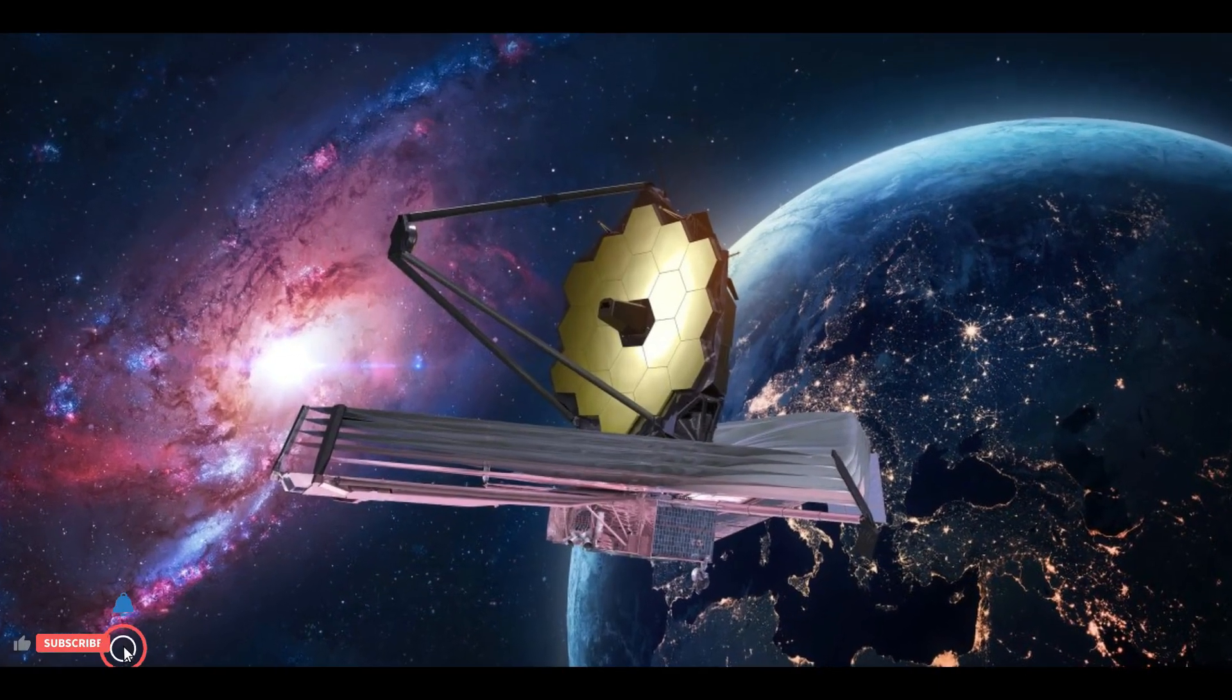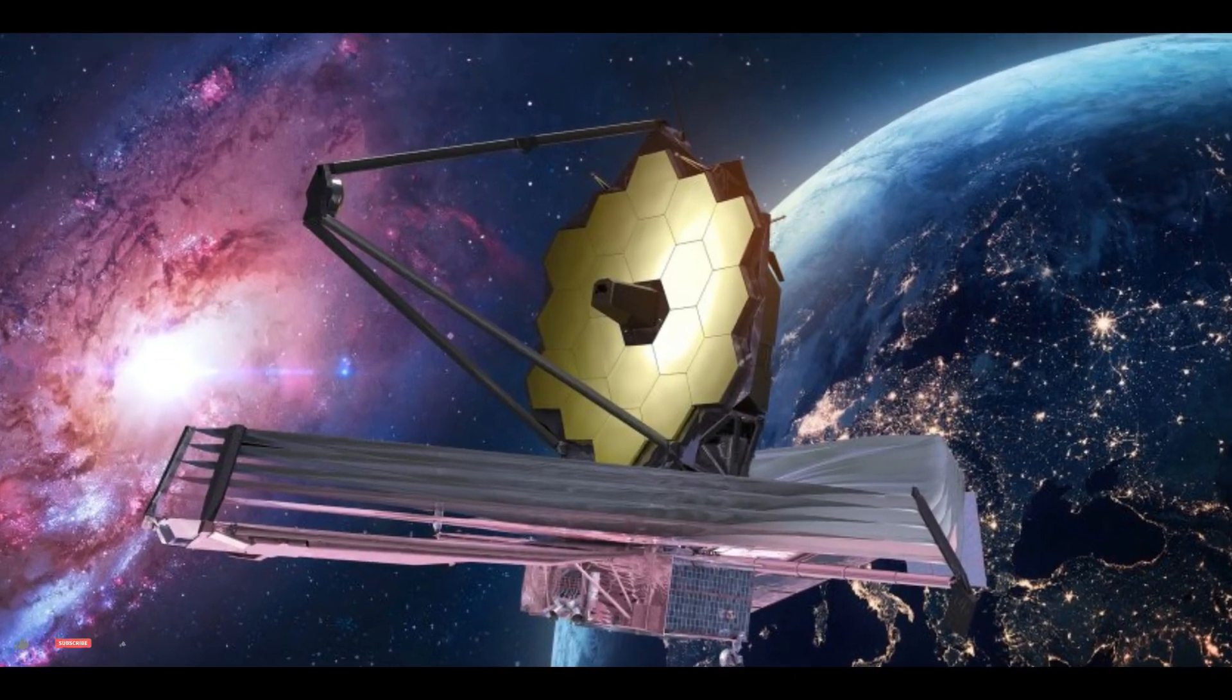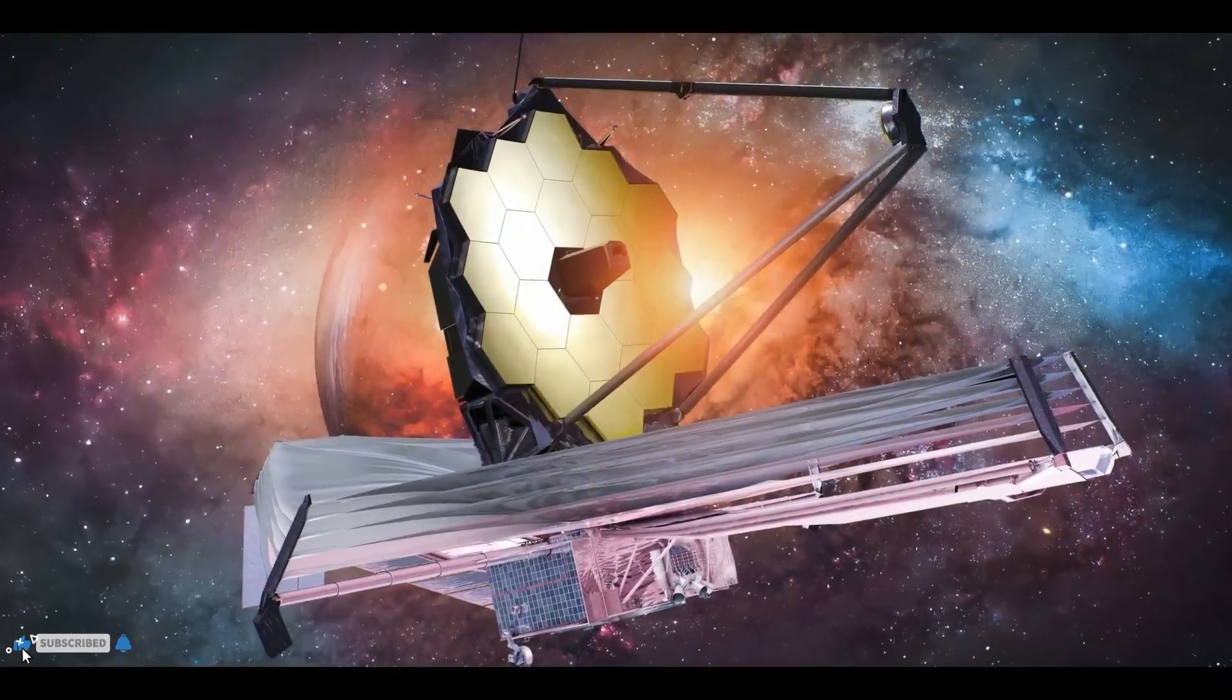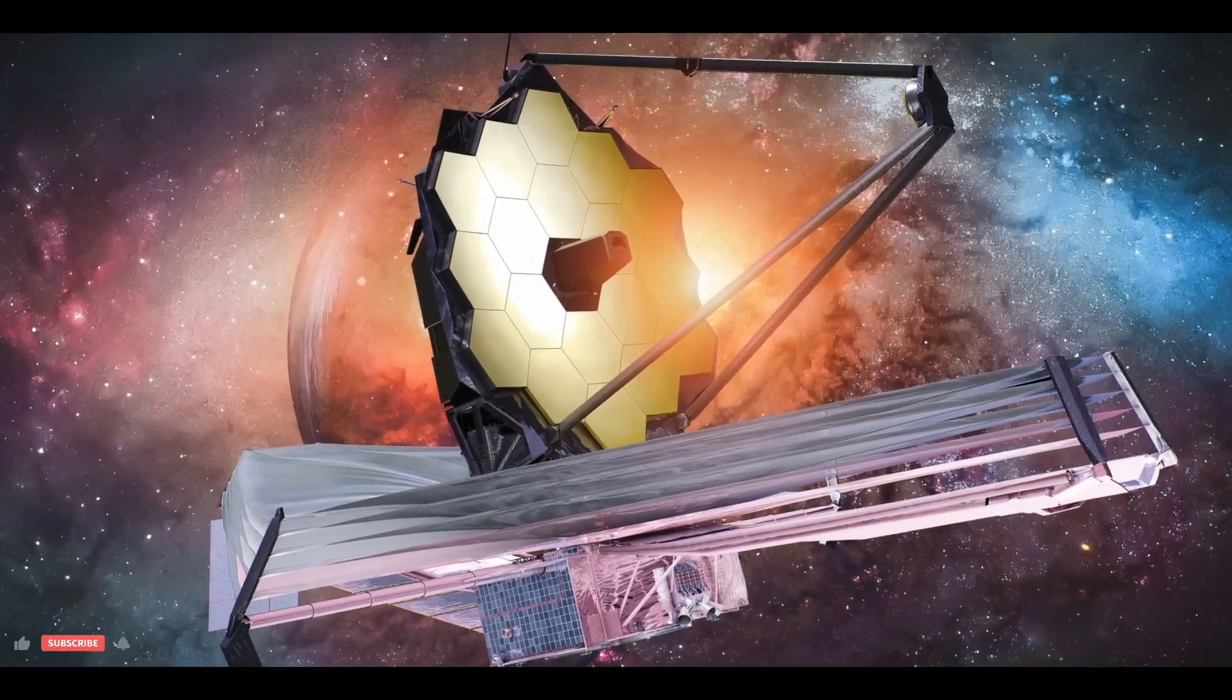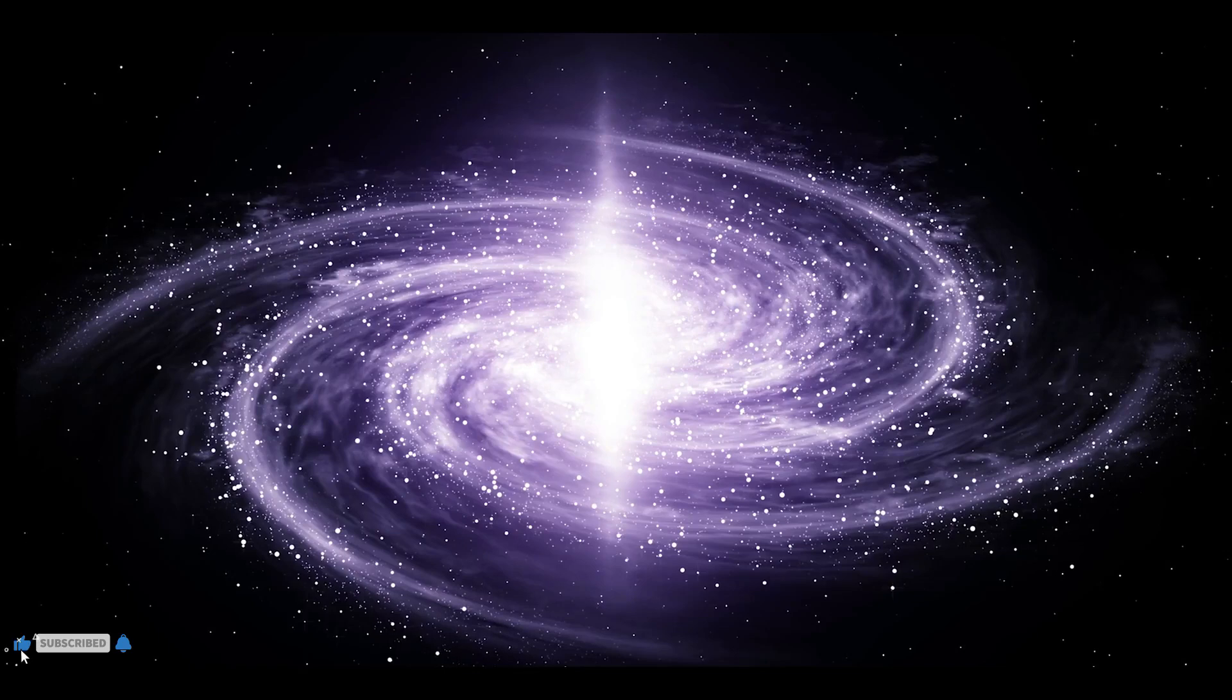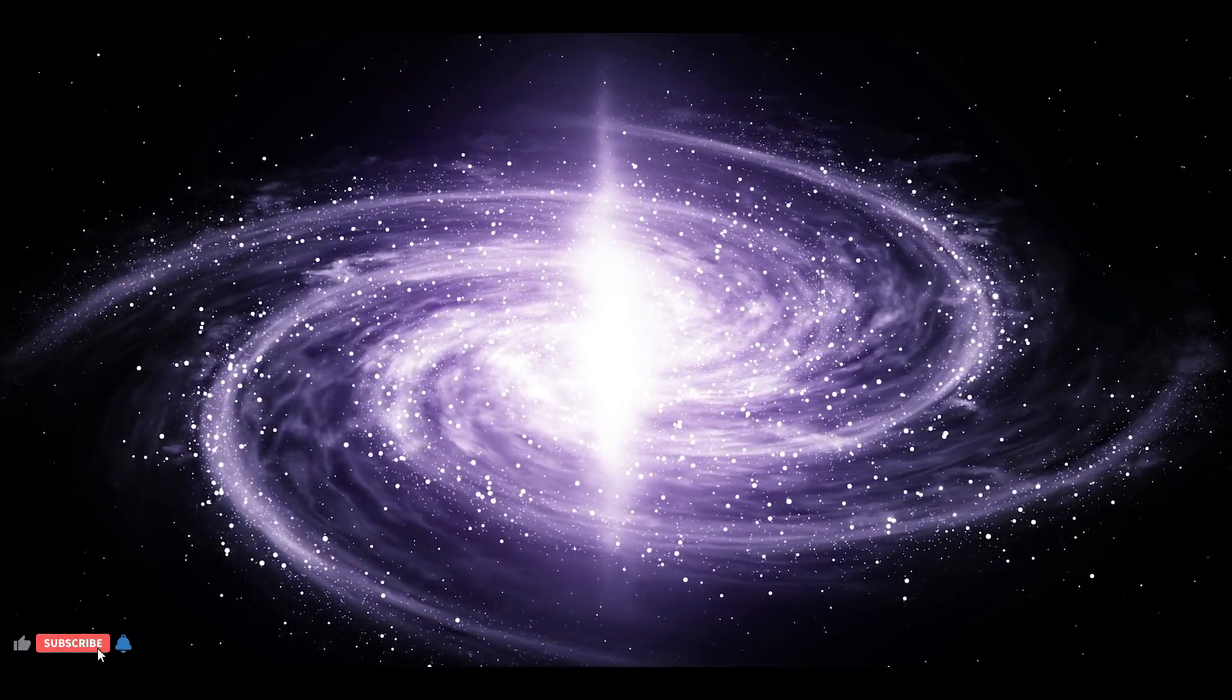The James Webb Space Telescope is the largest and most powerful space telescope ever built. It is approximately the size of a tennis court when fully deployed. The telescope's capabilities will allow astronomers to study the atmospheres of exoplanets in detail, potentially identifying signs of habitability and even potential biosignatures.